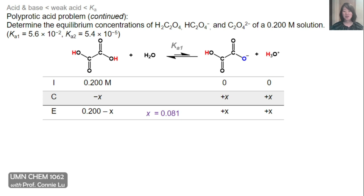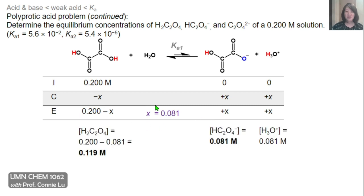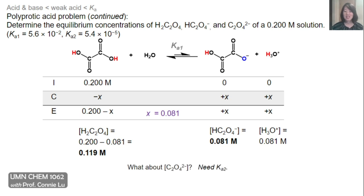Next, we're asked to determine the equilibrium concentrations of the three different states of oxalic acid: its neutral form, the monoanion, and the dianion. In our ICE table we had expressions for the neutral acid and the monoanion. Plugging in x, we get that at equilibrium the neutral acid is 0.119 molar and the monoanion conjugate base is 0.081 molar. That leaves the question: what about the dianion, where all the protons are gone? That doesn't appear in Ka1, but it does appear in Ka2.